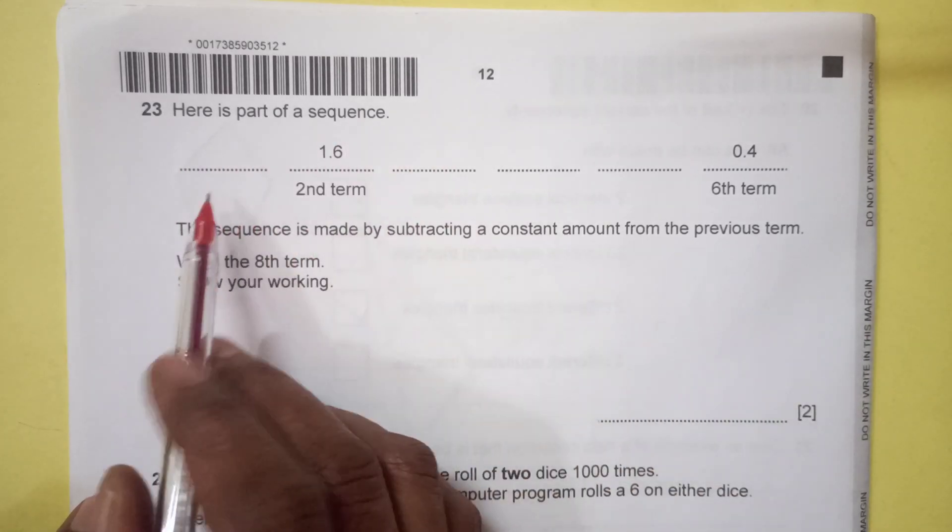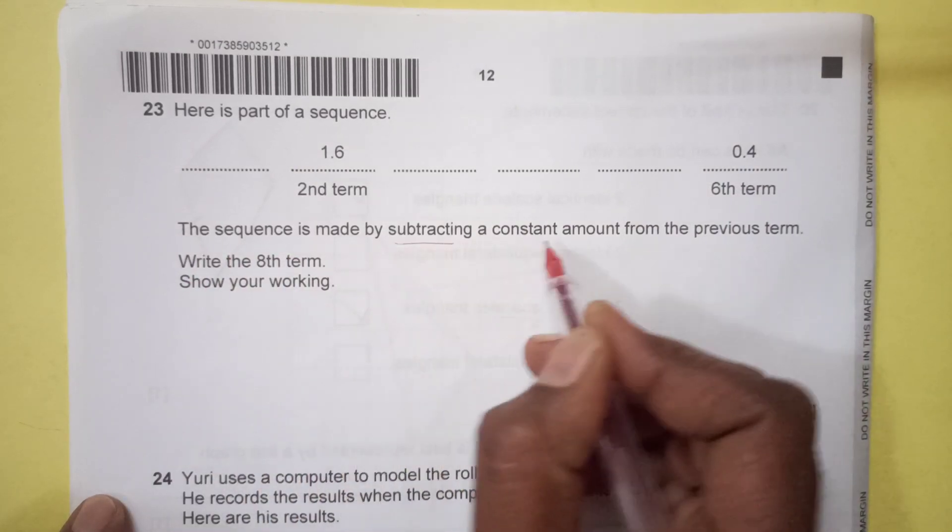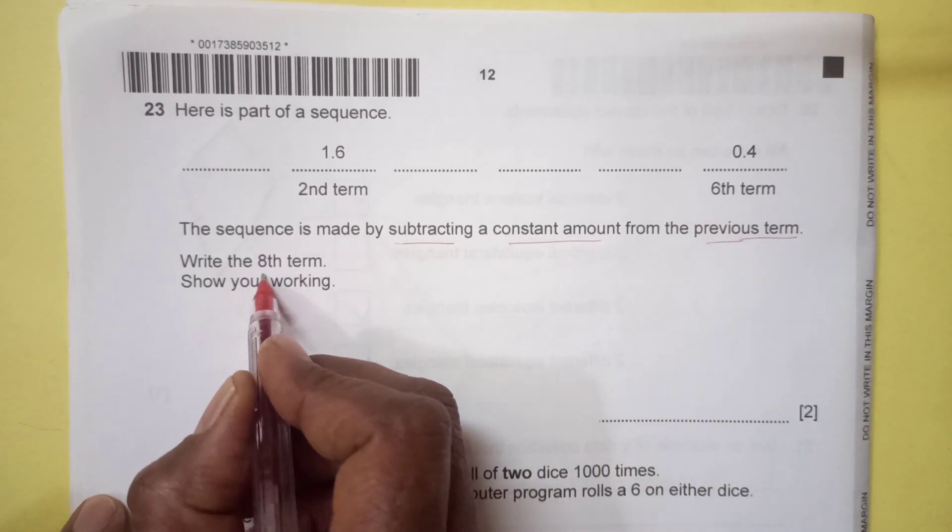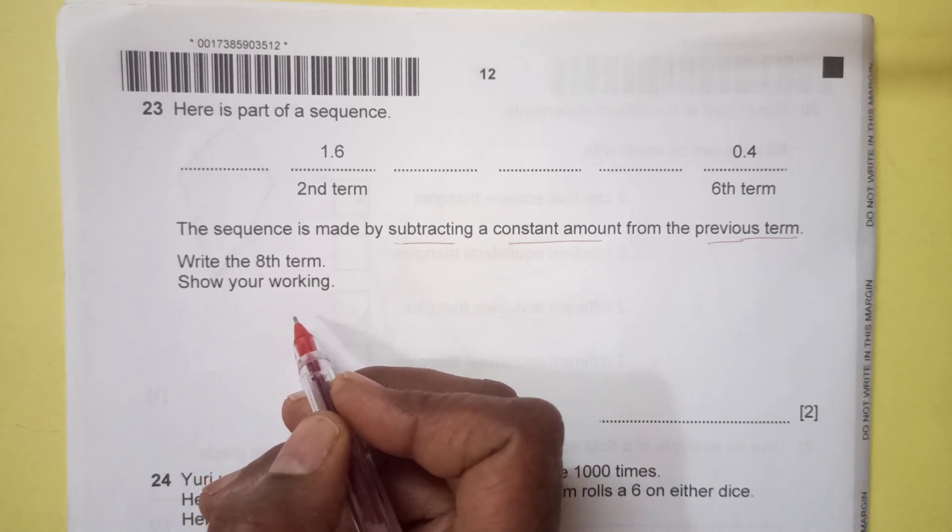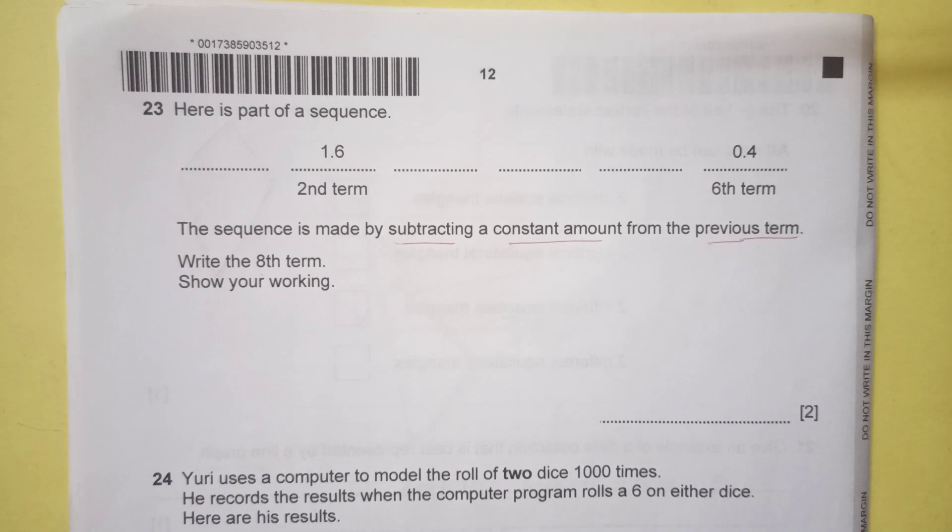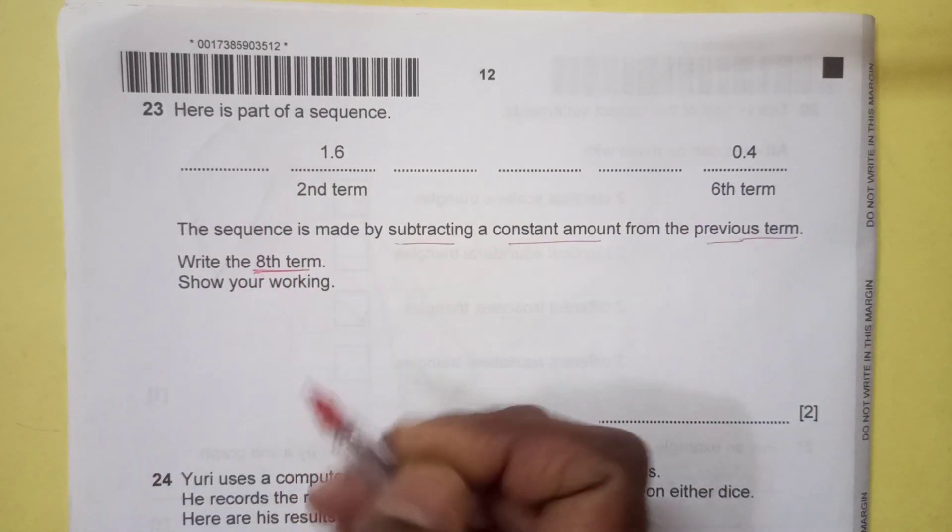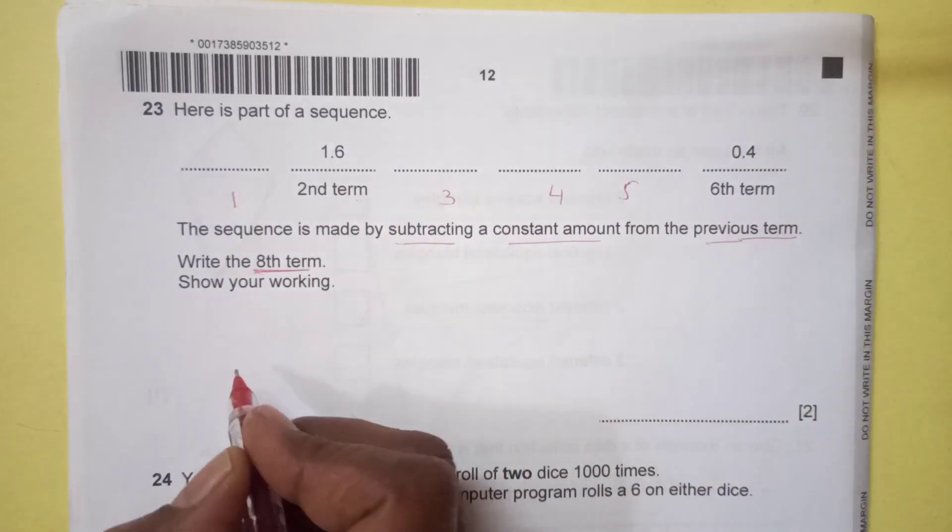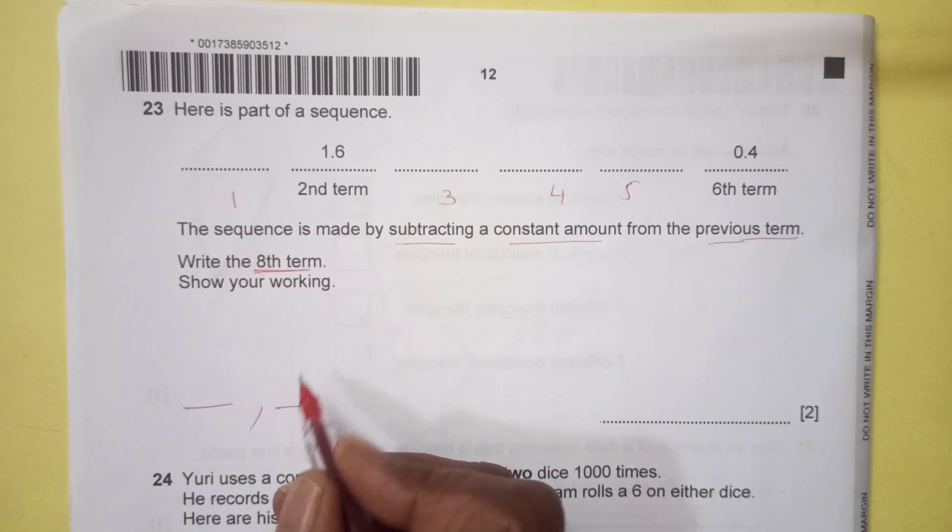Here is part of a sequence. We have two terms given here. The sequence is made by subtracting a constant amount from the previous term. Write the eighth term, show your working. Now we are not told to fill this, we are asked to find out the eighth term. For this is first term, second, third, fourth, fifth, this is sixth. Then we are looking for the eighth term.